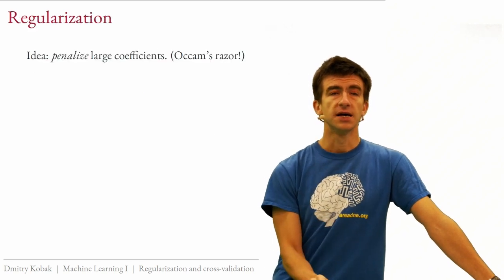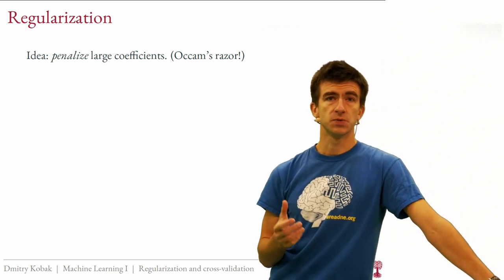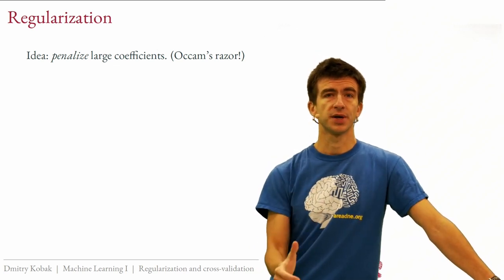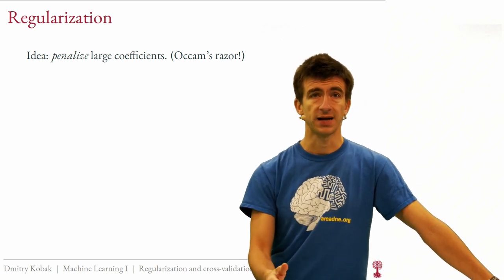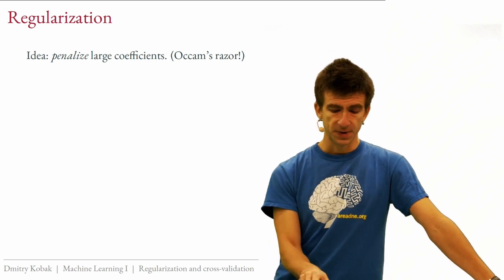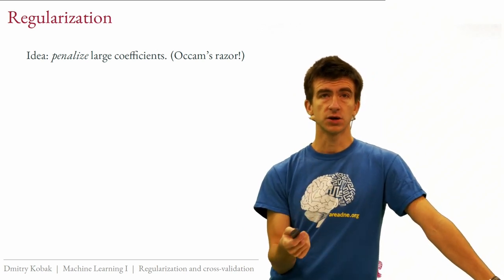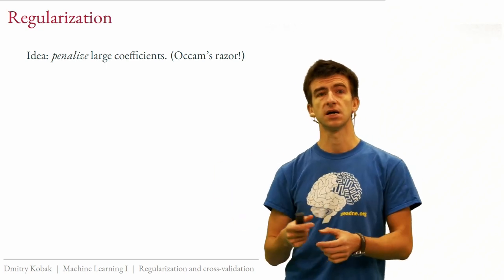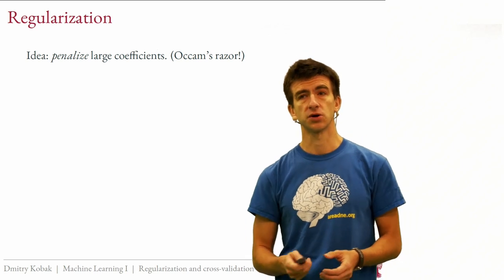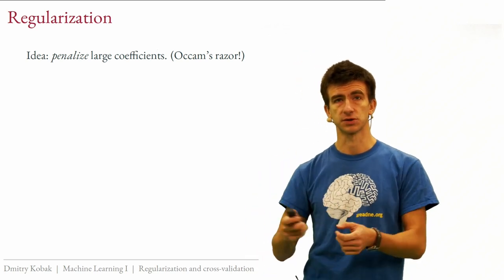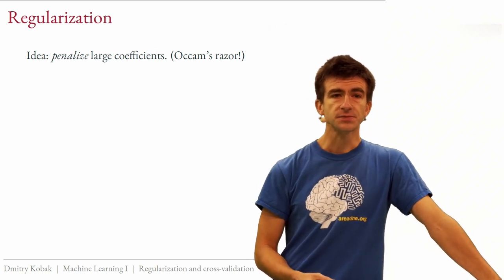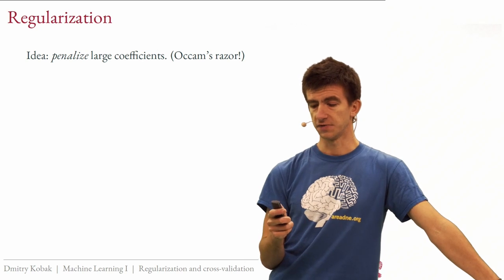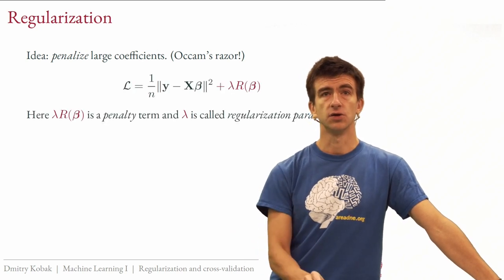The key idea of regularization is to change the loss function such that the model has to pay a price for having very large coefficients. We penalize large coefficients, which makes the model prefer small coefficients — and therefore simpler models that don't make very wiggly lines. In some sense, this formalizes Occam's razor: prefer simpler models to more complicated ones that fit the data similarly well.